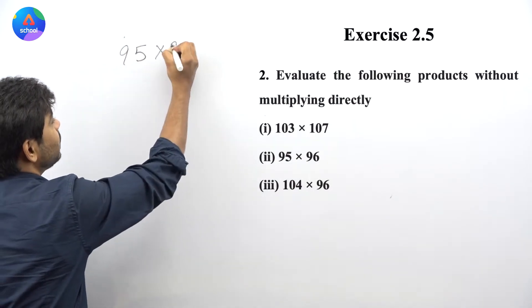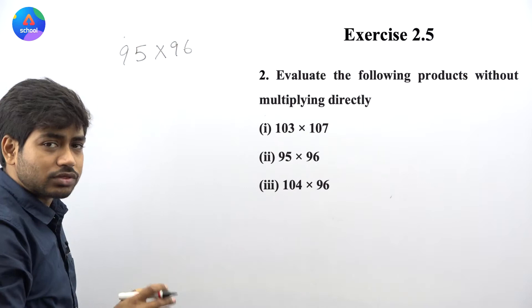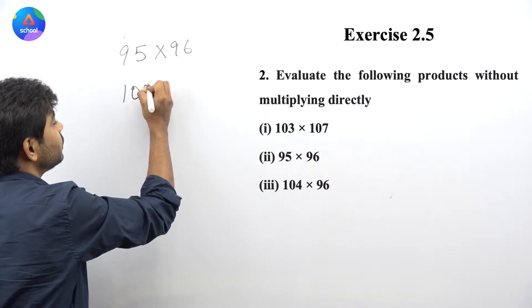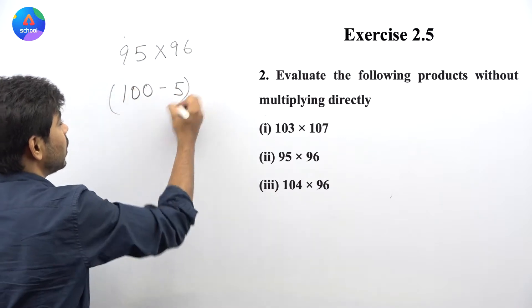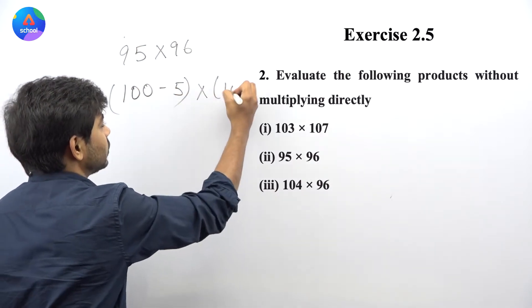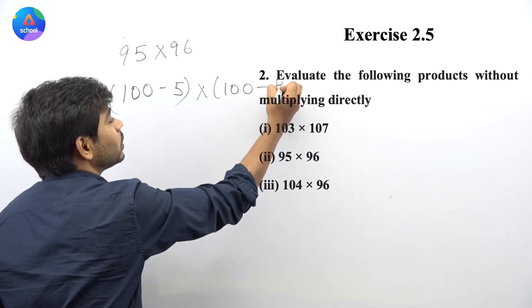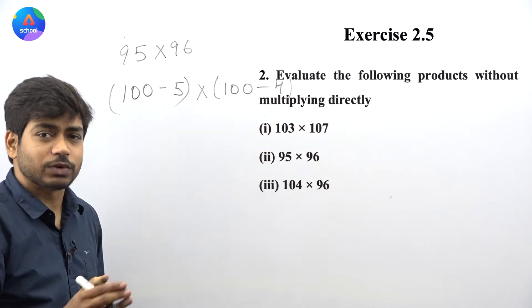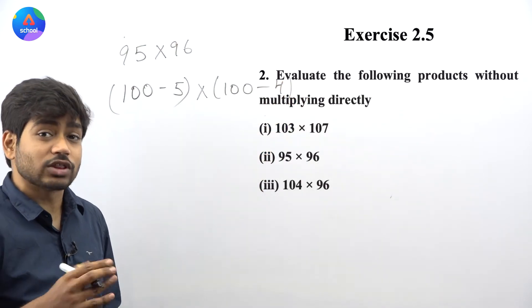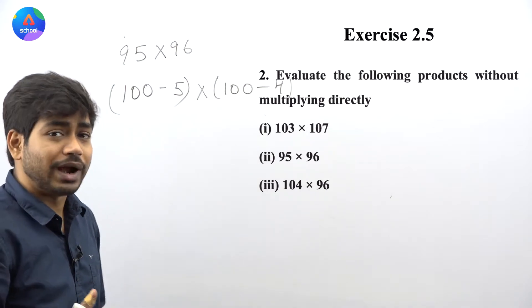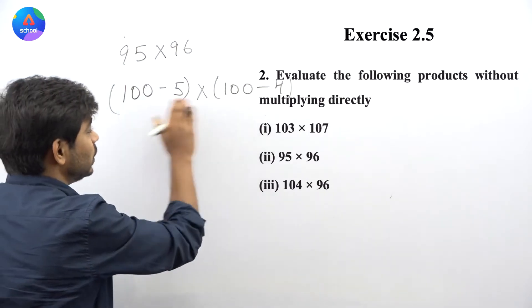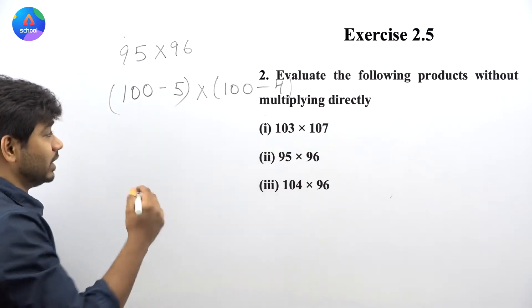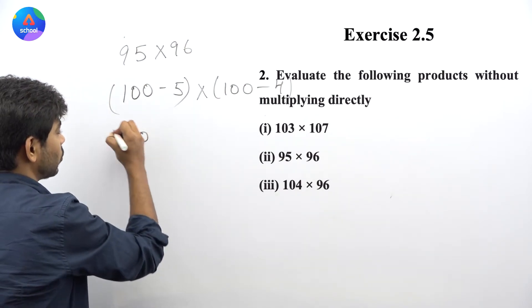Next part: 95 × 96. देखिए same approach use करनी है जो हमने पिछले question में use करी थी। 95 को मैं 100 − 5 लिख सकता हूं और 96 को मैं 100 − 4 लिख सकता हूं। यहाँ पर हमें (x−a)(x−b) format को लेकर चलना होता है। x की value same — 100 — आ जाती है।